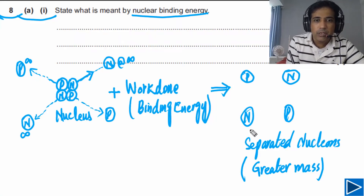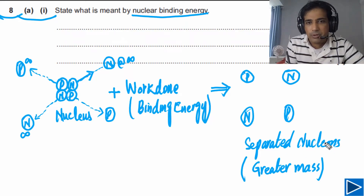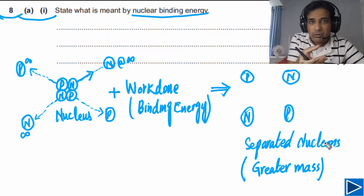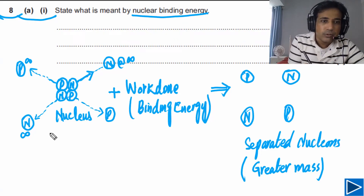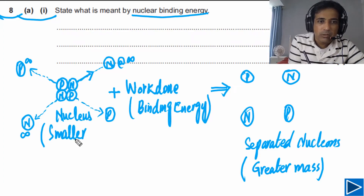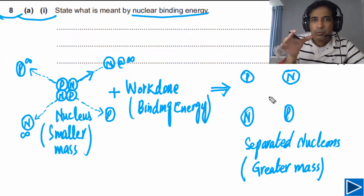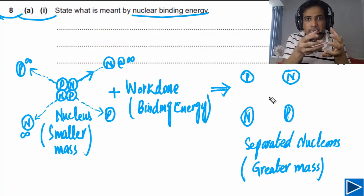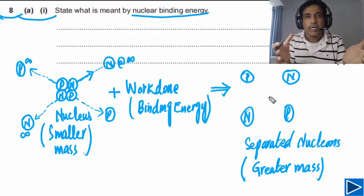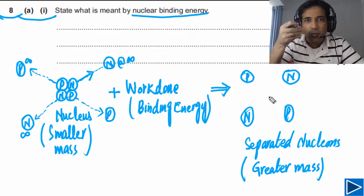The mass of separated nucleons is greater than their mass when inside the nucleus. Individual protons and neutrons are heavier than when they are inside the nucleus — the nucleus nucleons have smaller mass. Total mass of separated nucleons is greater than the mass of the nucleus, because the energy supplied has been converted into matter.